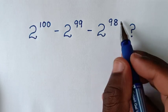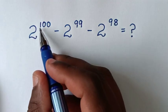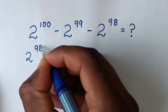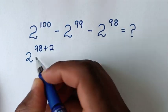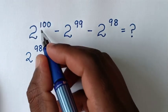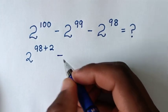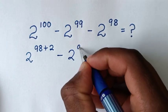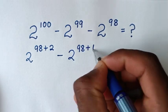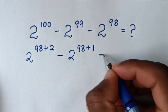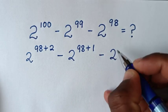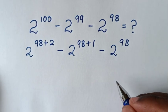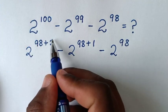2 power of 100 is the same as 2 power of 98 plus 2, because 98 plus 2 gives the power of 100. Then minus 2 power of 99 is the same as 2 power of 98 plus 1. Then minus 2 power of 98.